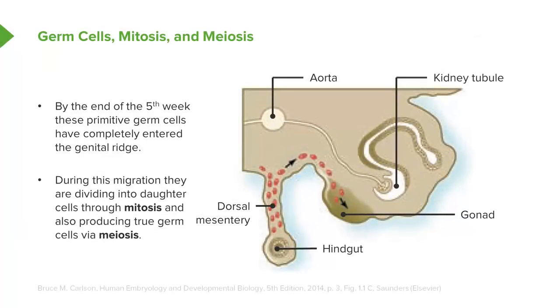During migration, these germ cells are undergoing mitosis to create more copies of themselves and also beginning to produce true germ cells via meiosis.